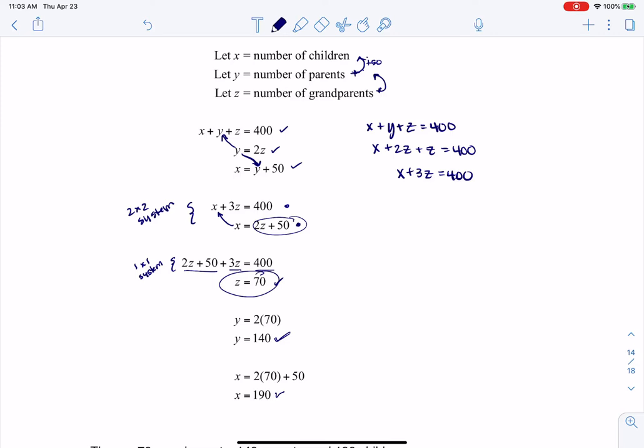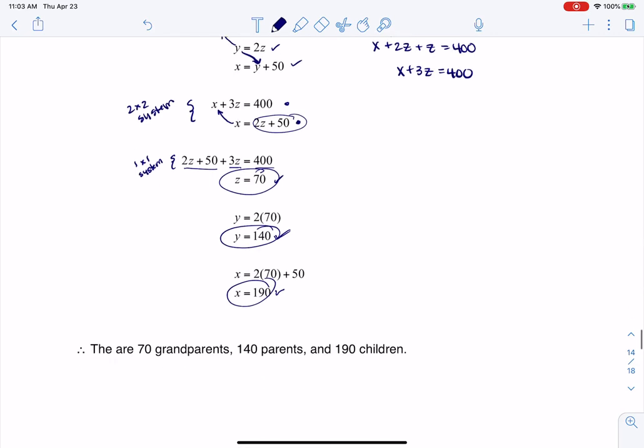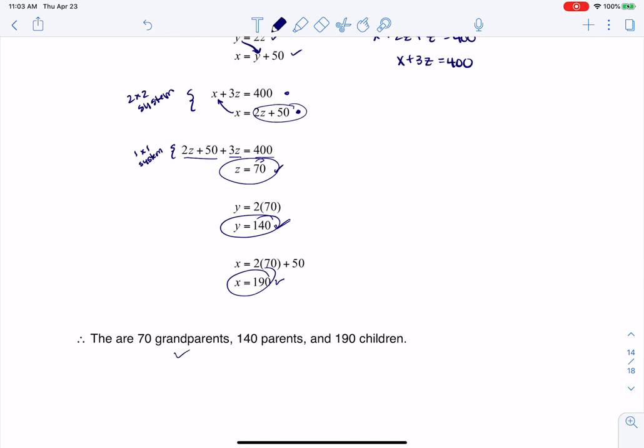So I've got my three numbers respectively, and I put some context to it. There were 70 grandparents, 140 parents, and 190 children.